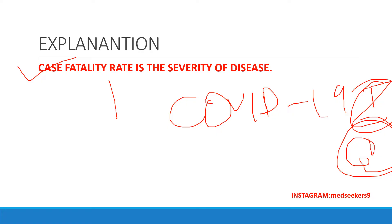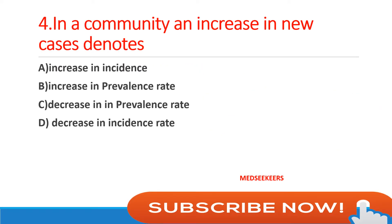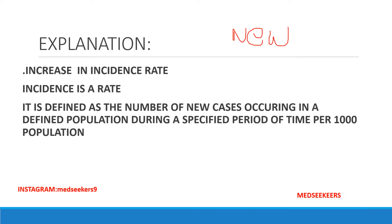Next question: in a community, an increase in new cases denotes — option A: increase in incidence; option B: increase in prevalence rate; option C: decrease in prevalence rate; option D: decrease in incidence rate. If you are clear with concepts of prevalence and incidence you can easily mark this answer. Comment your answers — this question is very easy and at the same time logical.